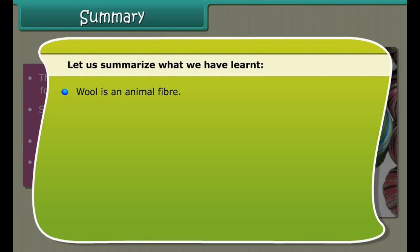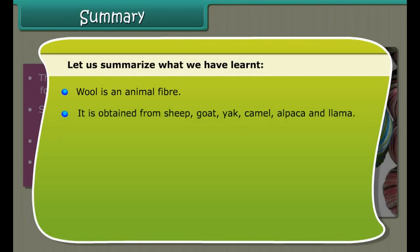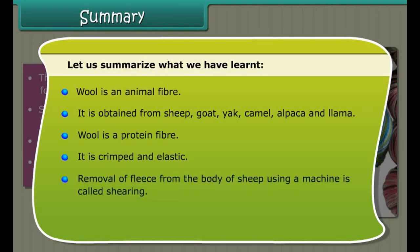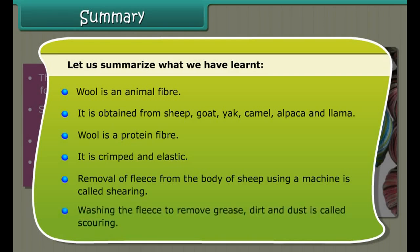The washed hairy skin is sent to a factory where hair of different textures are separated or sorted. The small fluffy fibers called burrs are picked out from the hair. Fibers are dyed in various colors, as the natural fleece of sheep and goats is black, brown or white. The fibers are then straightened and rolled into yarn. Finally, the wool is ready to use.